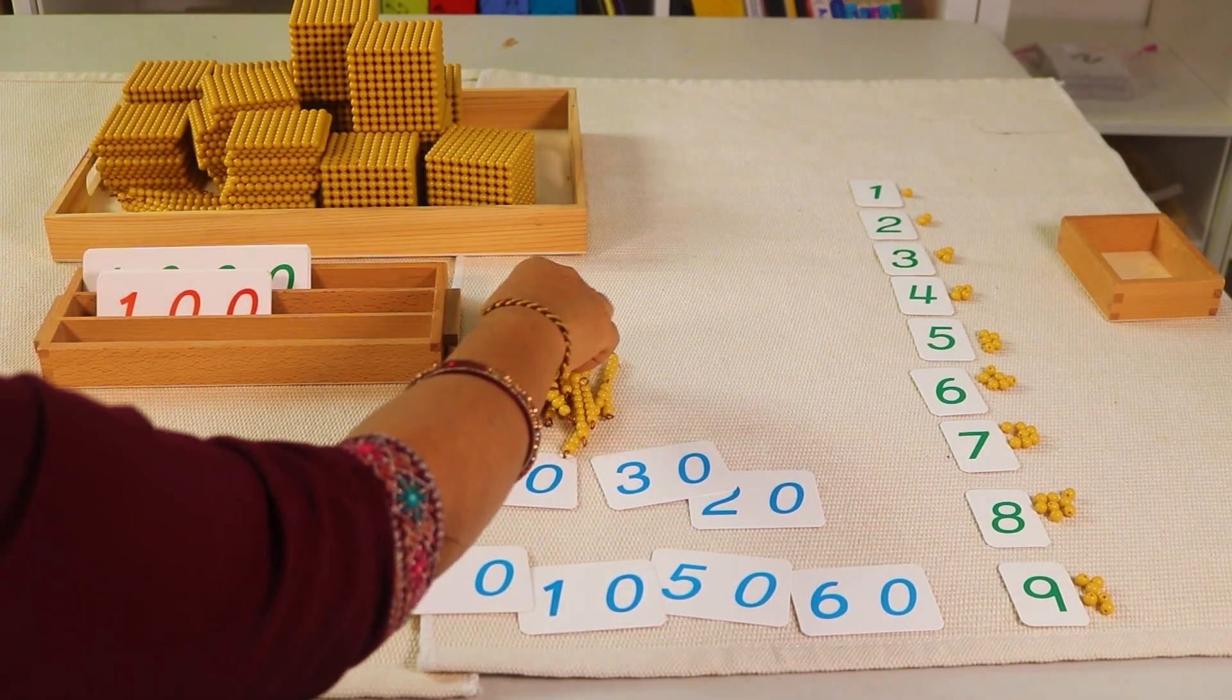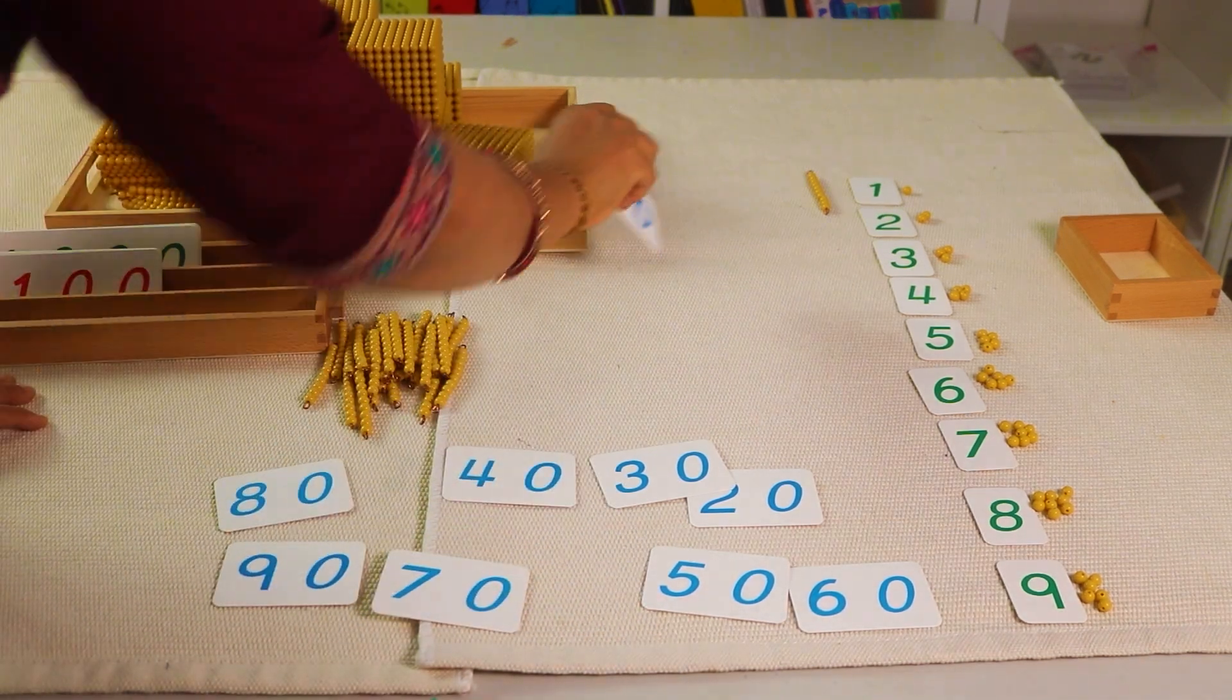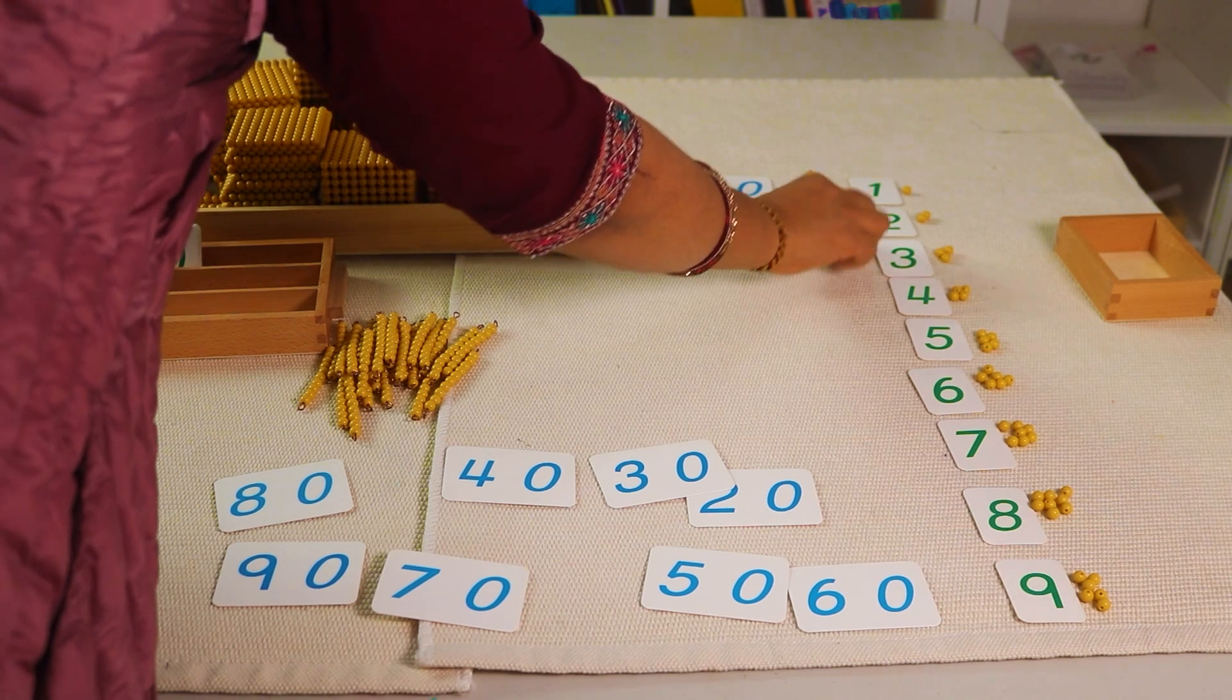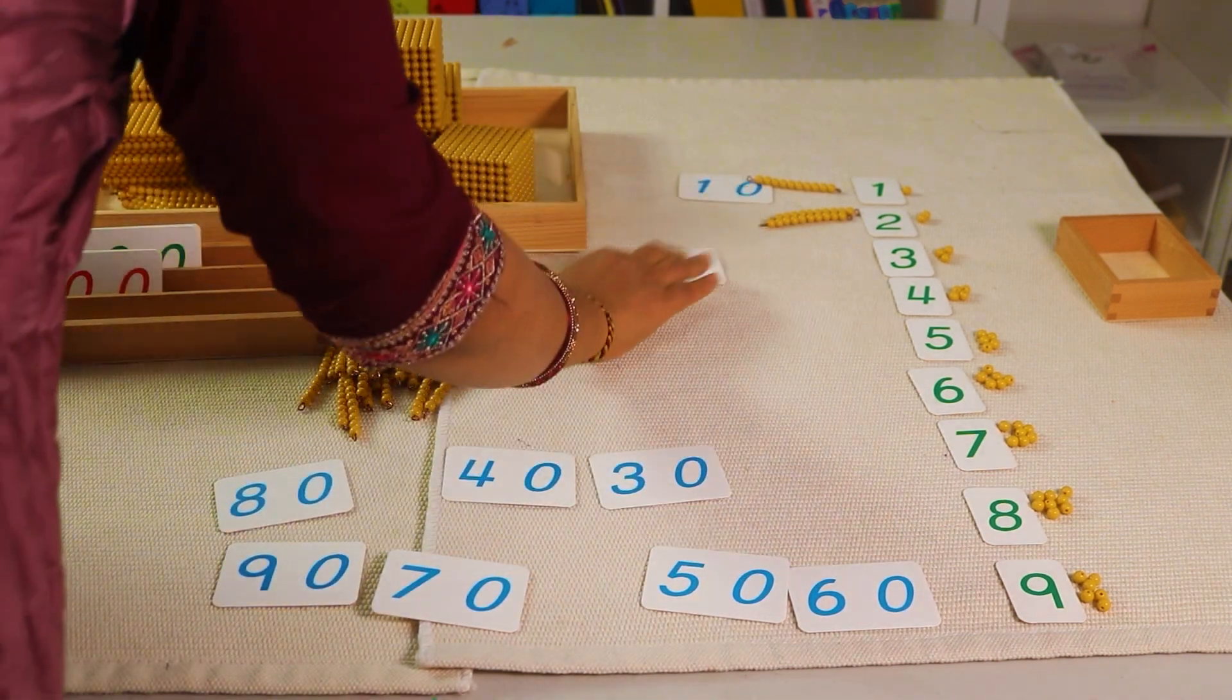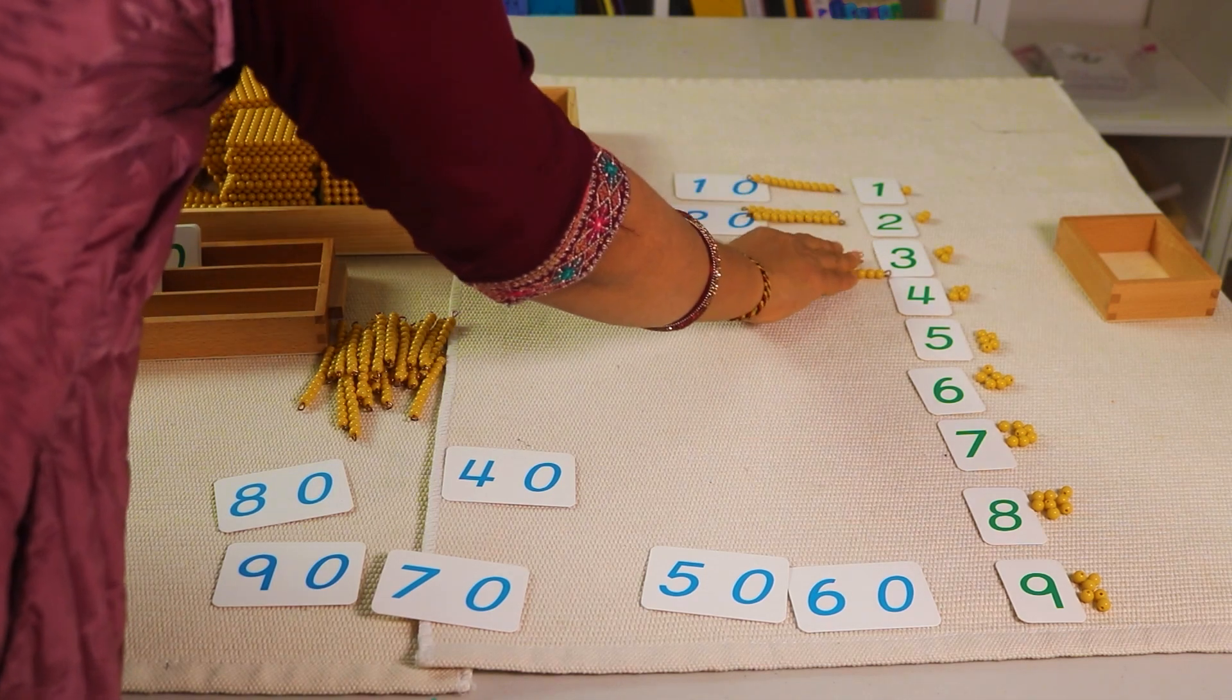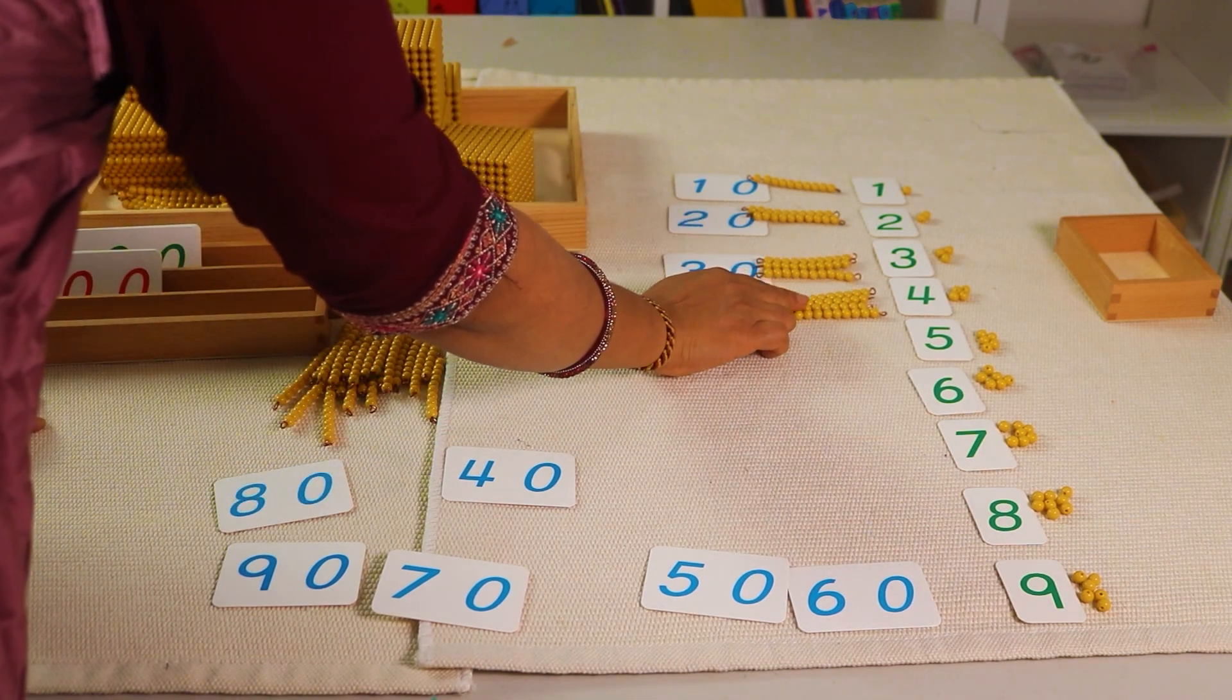You can ask your child what comes after nine. That is ten. So you have to take ten bead bars out. This bead bar, this is ten. This is twenty. There is no place for them to put them in a vertical, so I prefer to put them in a horizontal way. Let's do twenty. What comes after twenty? Thirty. Ten, twenty, thirty. Now what comes after thirty? Forty. Ten, twenty, thirty, forty.